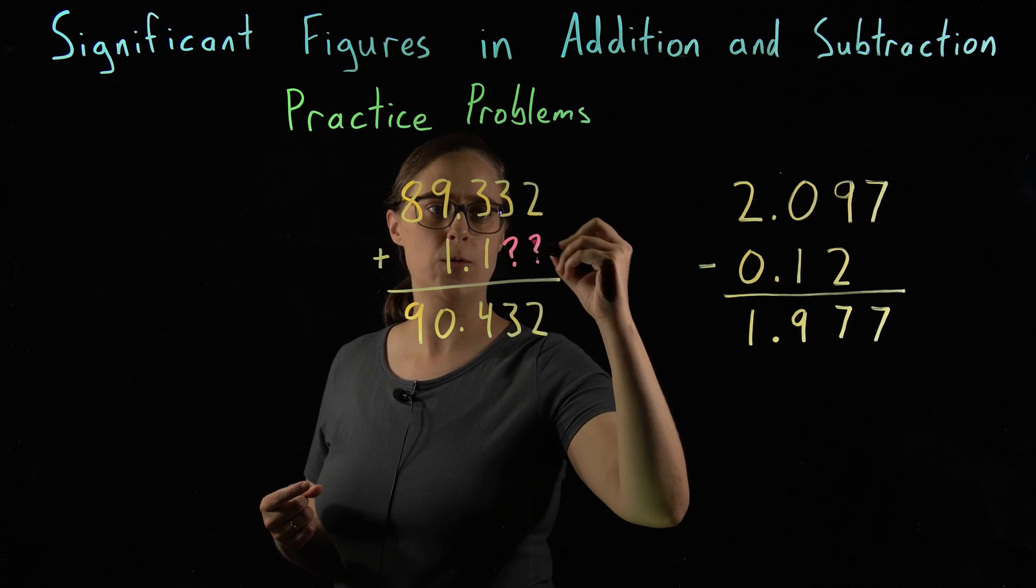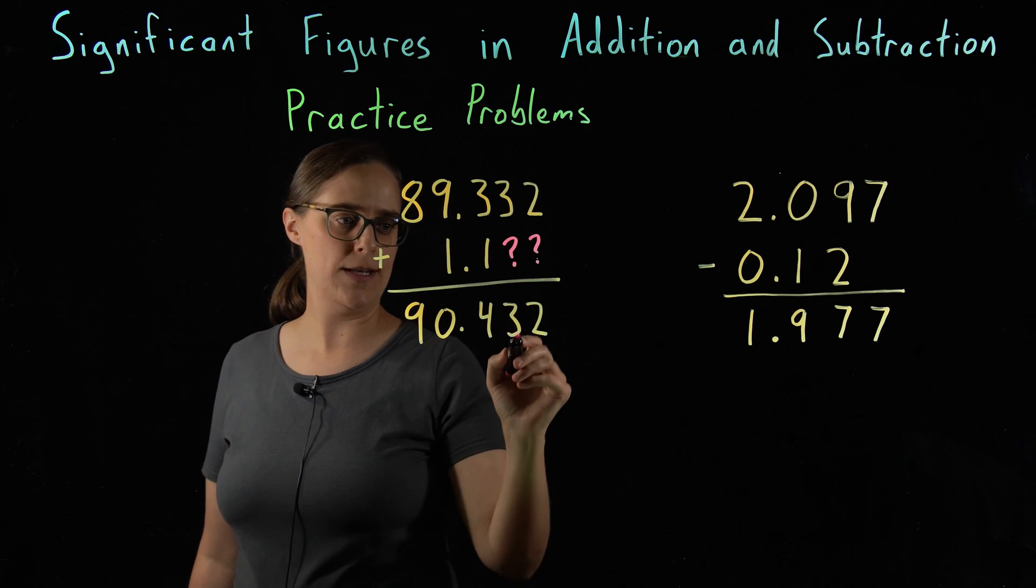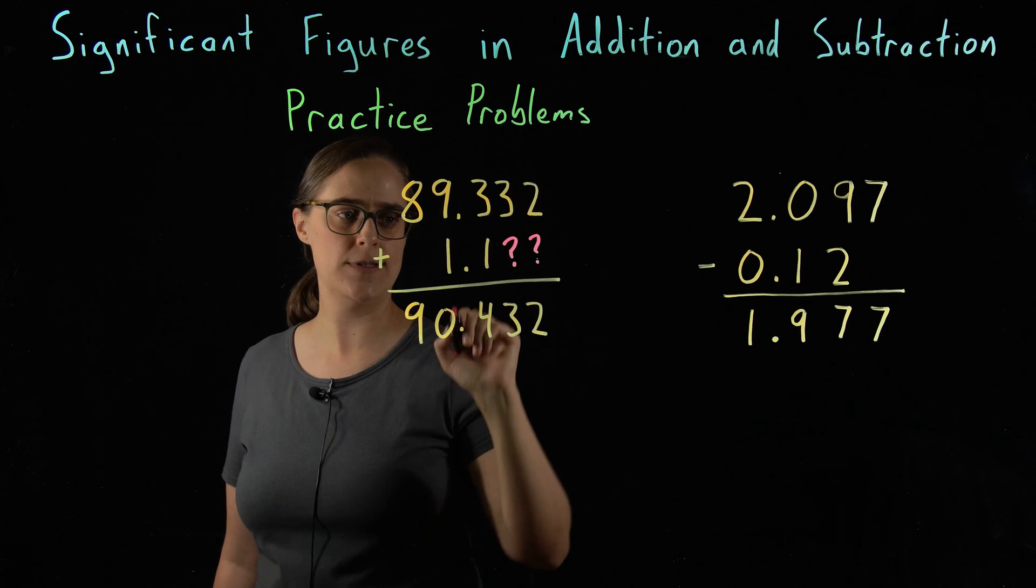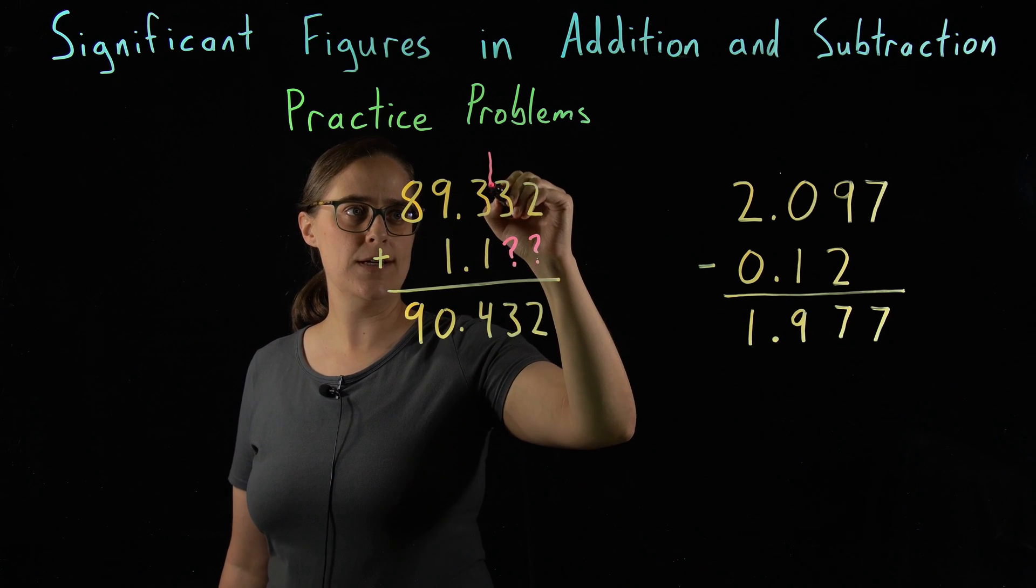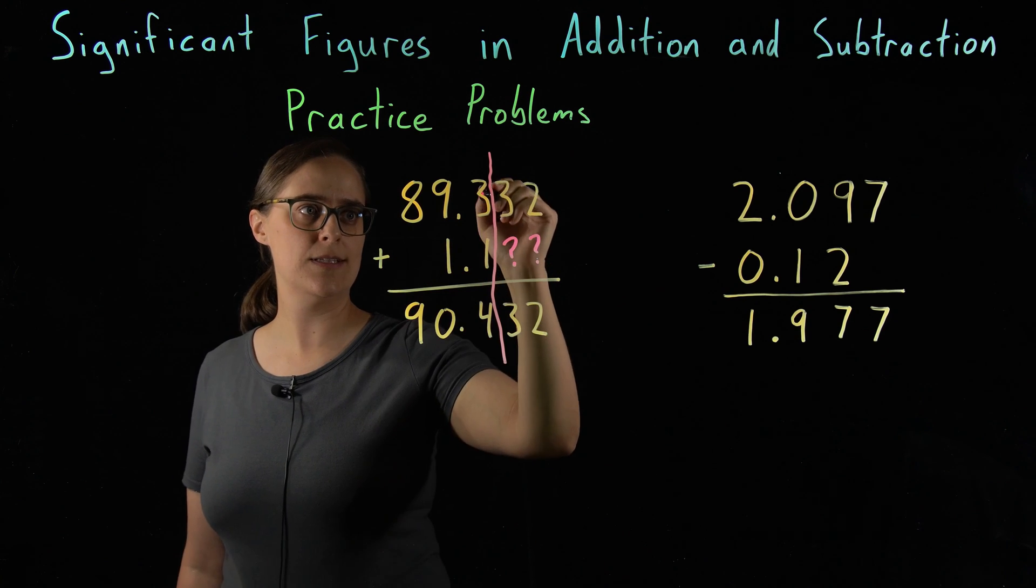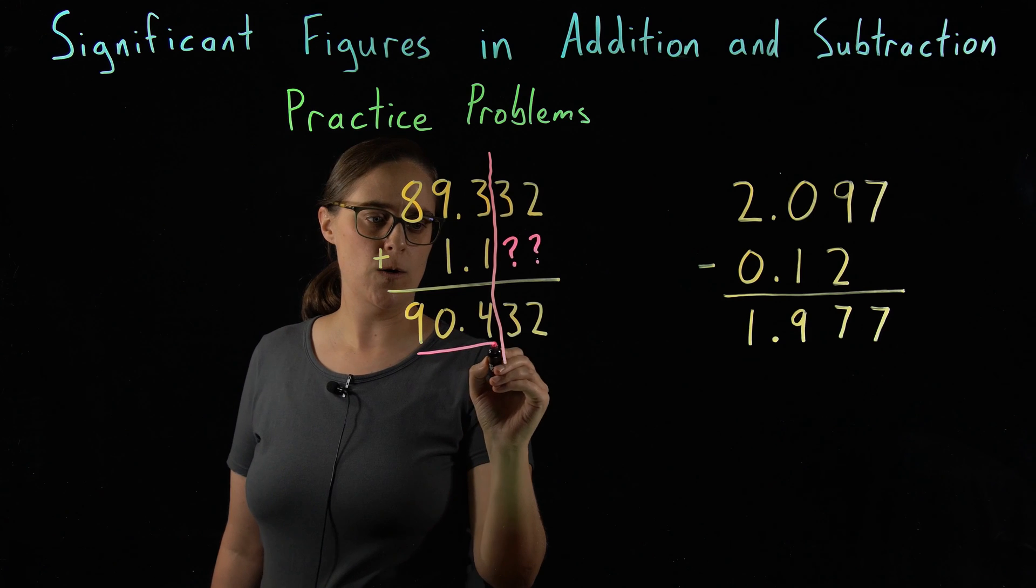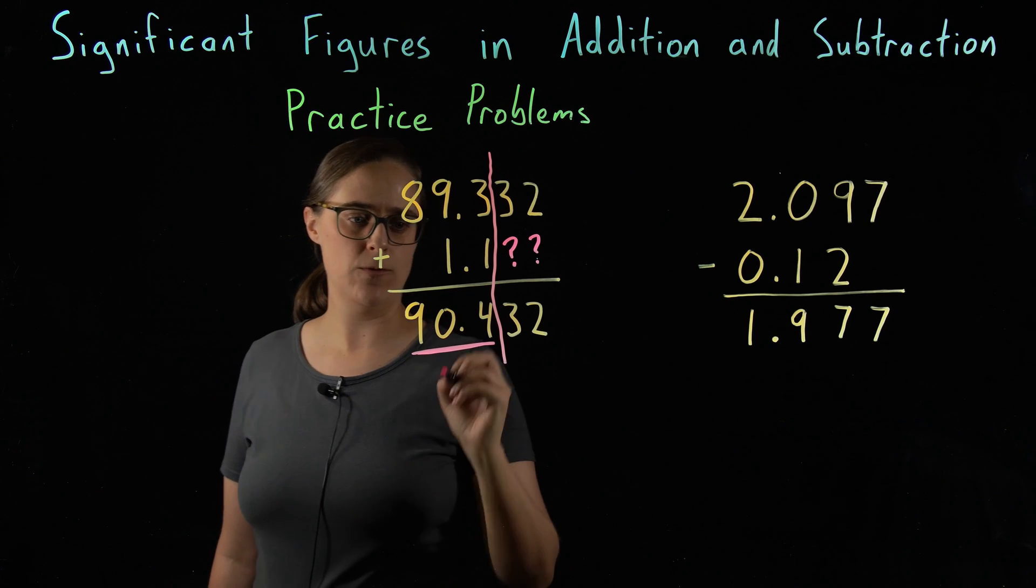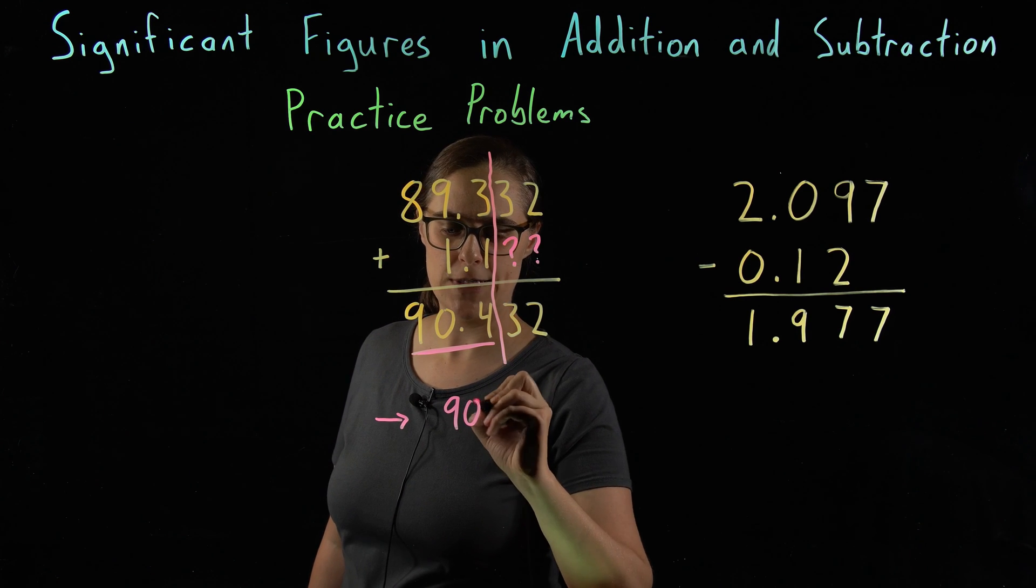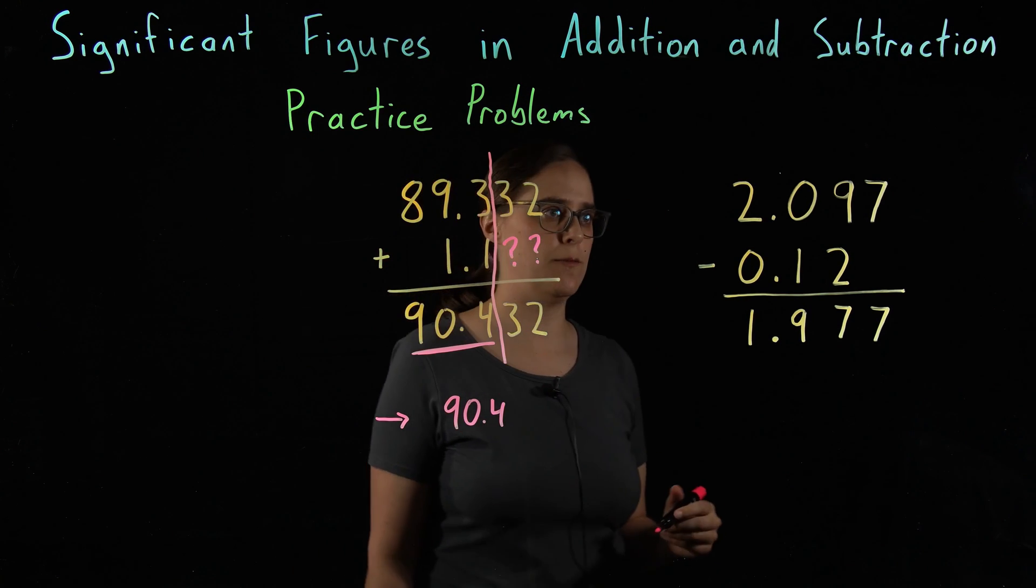I do not know what these two digits would be after the 1.1. That means that I don't know what was added to this 3 or to this 2. So our cutoff is right after this tenths place. We know that 3 plus 1 equals 4. All I know is this 90.4. We need to round our answer. Our correct answer is 90.4.